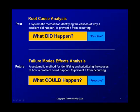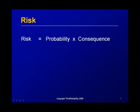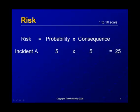One is thought of as being reactive — RCA — and the other proactive — FMEA — but they fit together because of cause and effect. A couple of concepts that are important upfront: the simple definition of risk is probability times consequence.